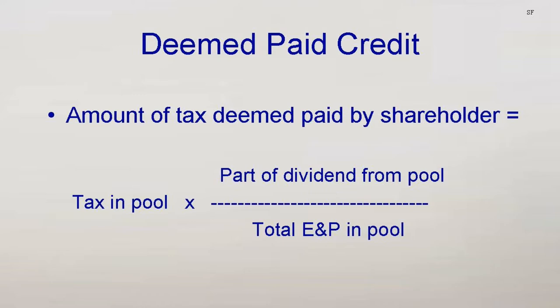The amount of tax and gross-up are equal to the same percent of taxes the subsidiary has paid as the dividend is of the after-tax earnings of the subsidiary. This provision does not apply to S-corporations. The amount of available deemed credit is computed under the formula on the slide. The pools are simply the accumulation of tax and earnings by basket, less amounts previously used. E&P refers to earnings and profits.